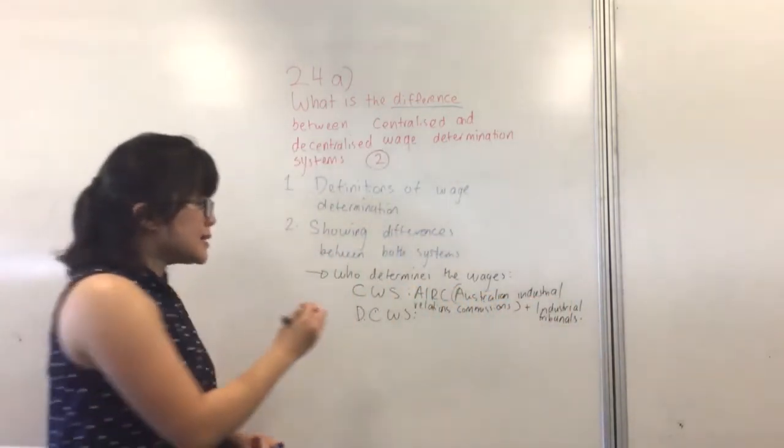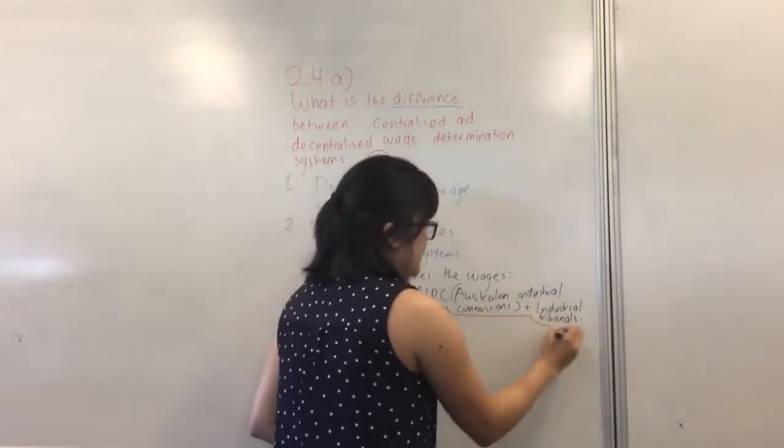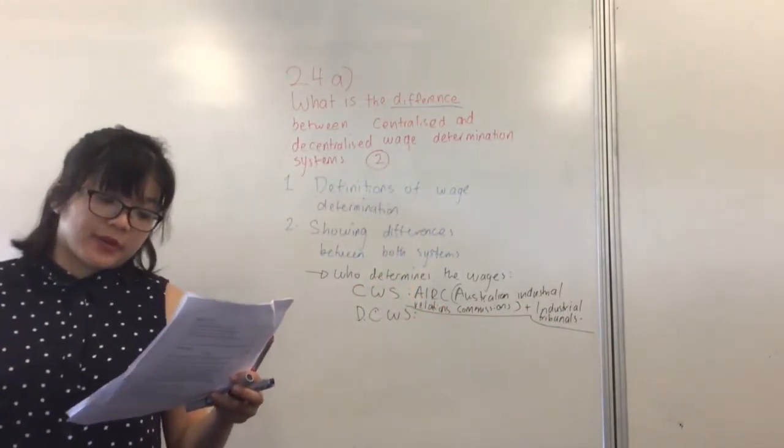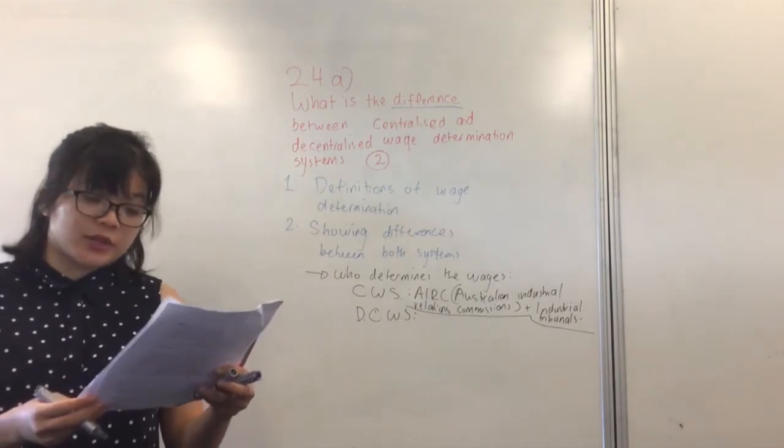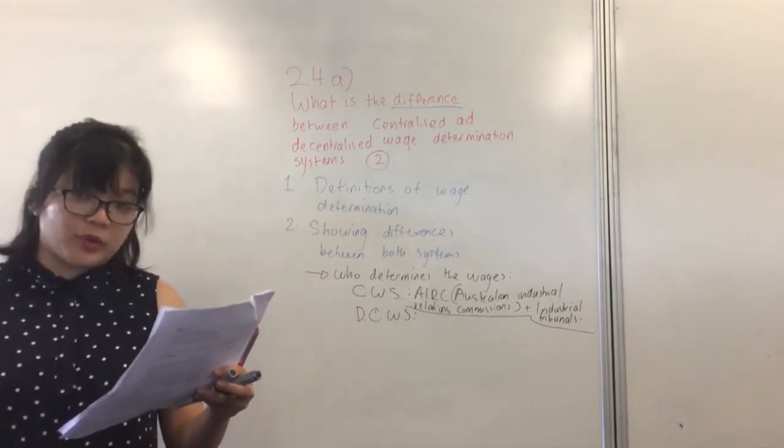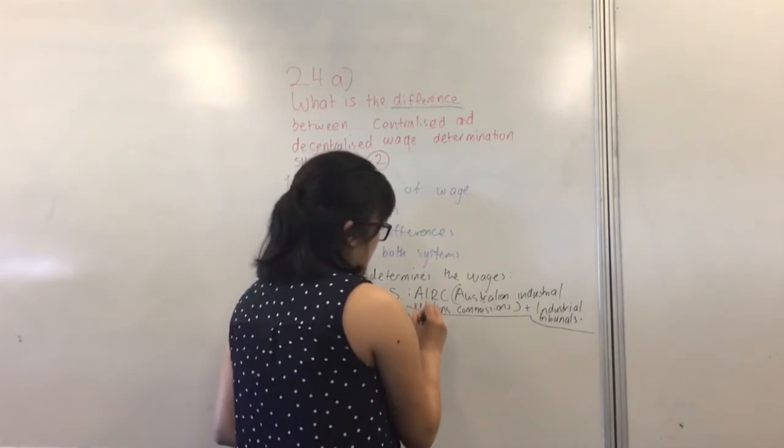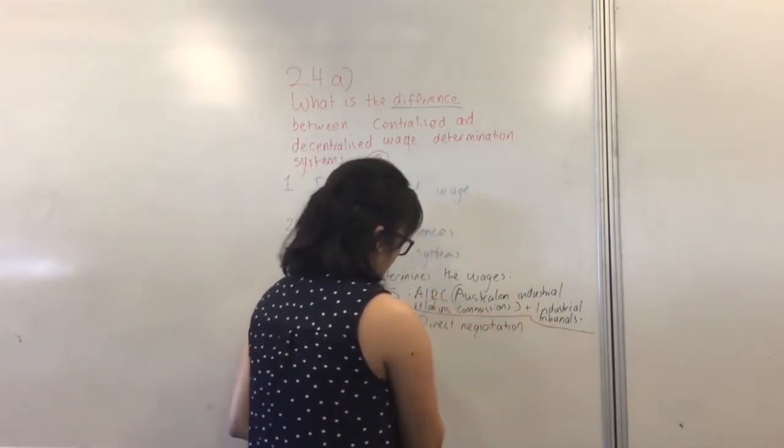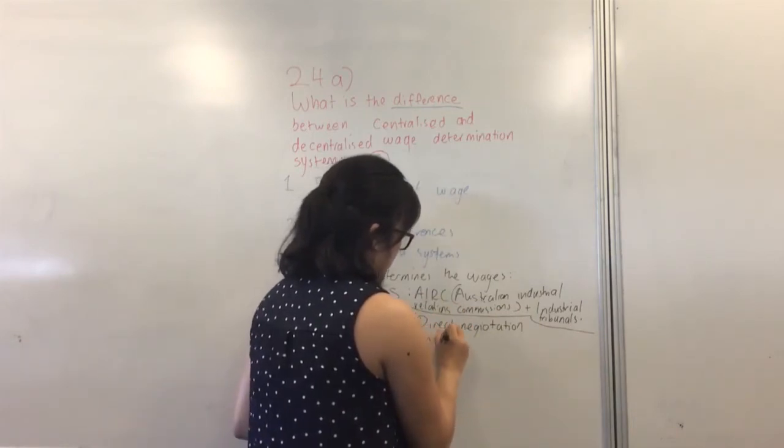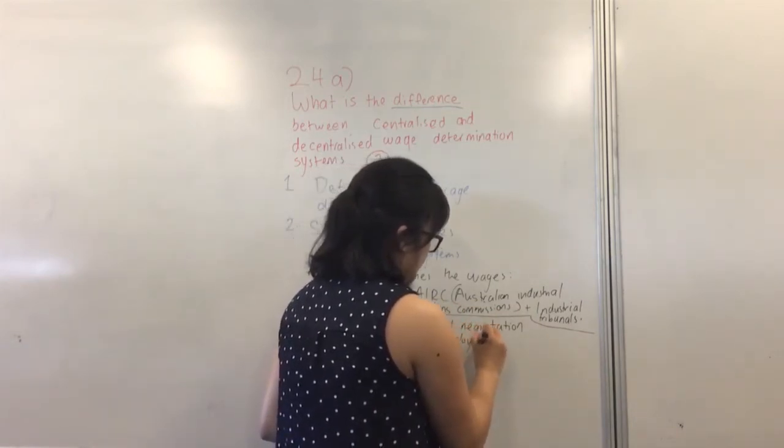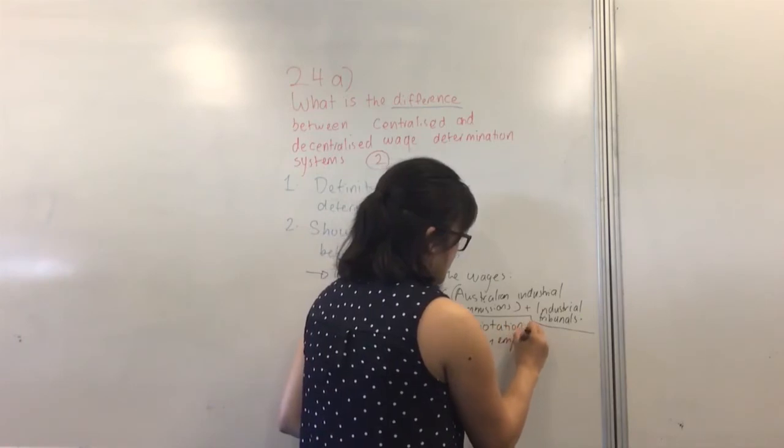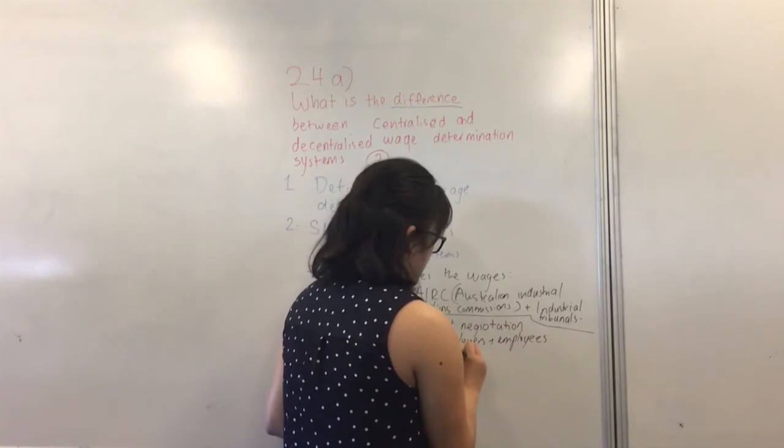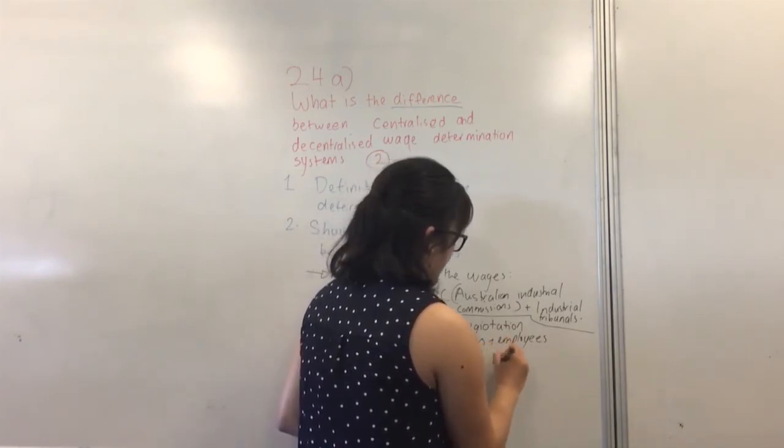However, in a decentralized wage system, who actually determines the wages is that it's a direct negotiation between employees and employers. So you've got direct negotiation between employers and employees, i.e., this could be on an enterprise level, so enterprise bargaining.